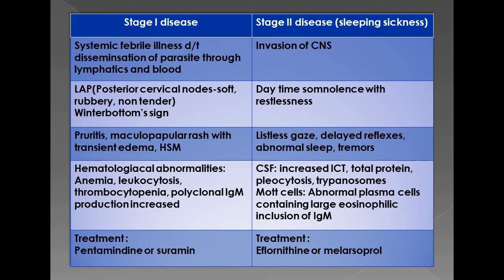The disease produced by Trypanosoma brucei is sleeping sickness, divided into two stages. Stage 1 does not involve the CNS. The patient may have non-specific signs and symptoms such as fever due to dissemination of the parasite through the lymphatics and blood. There will be lymphadenopathy, especially of the posterior cervical lymph nodes, which are soft, rubbery, and non-tender. This posterior cervical lymphadenopathy is characteristically called Winterbottom's sign. The person may have generalized pruritus, maculopapular rash with transient edema, and enlargement of the spleen and liver. In the blood, there is anemia, leukocytosis, thrombocytopenia, and polyclonal IgG production.